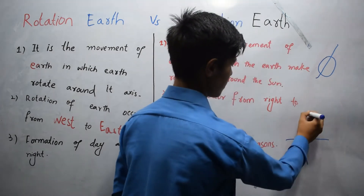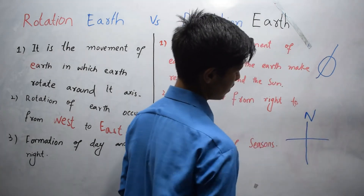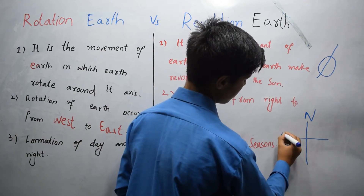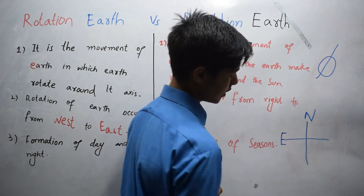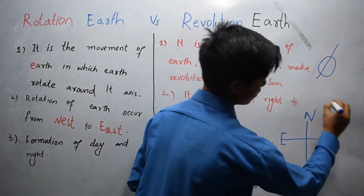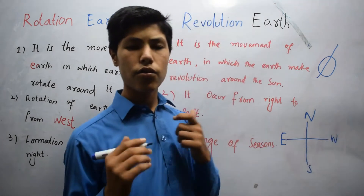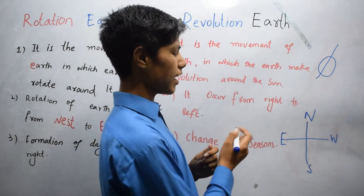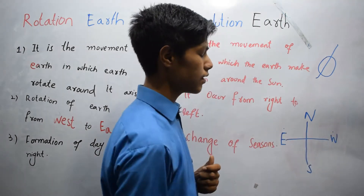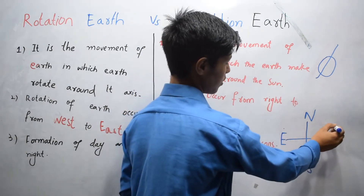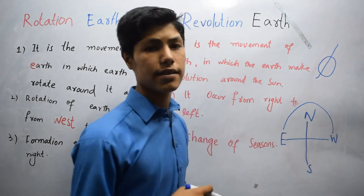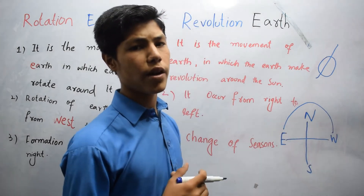This is north, this is east, this is south, and this is west. The rotation of earth basically occurs from west to east — anticlockwise.